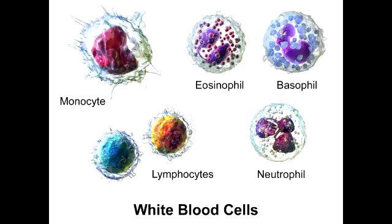Neutrophils are a type of granulocyte because they have granules. Neutrophils have small but more numerous granules, as well as large and less numerous granules.